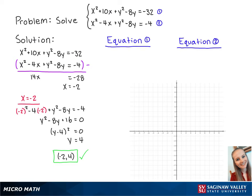The standard form of the first equation is x plus 5 squared plus y minus 4 squared equals 9. This circle has a center at negative 5, 4 with a radius of 3.